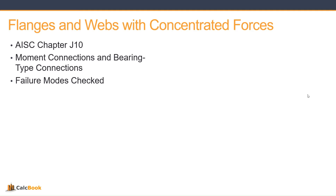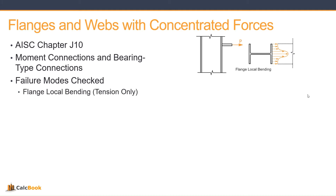Within the chapter, the failure modes that we check: the first one is flange local bending. That's going to be tension on the flange — the tensile component of that moment connection pulling on the column flange.